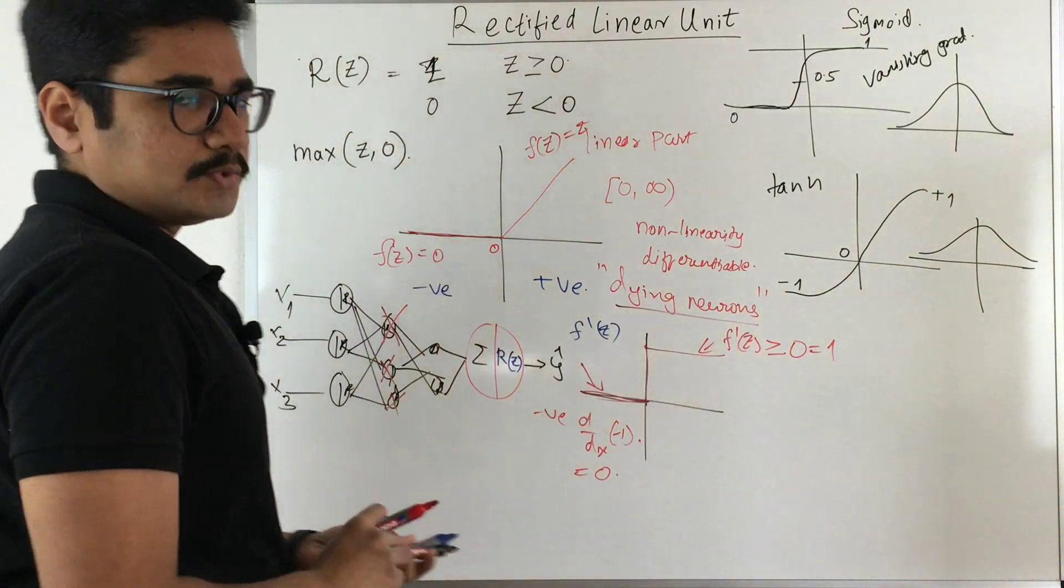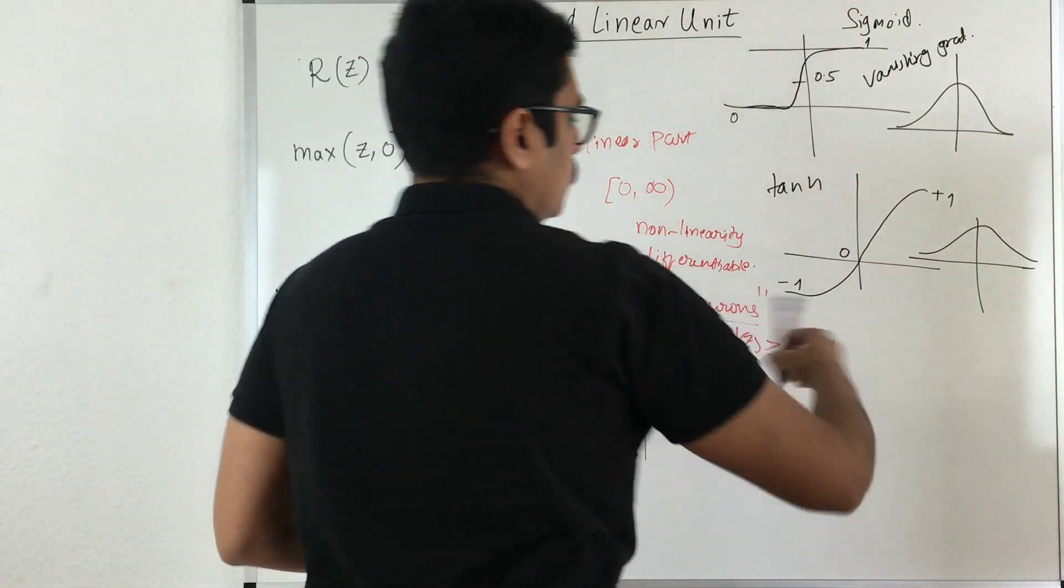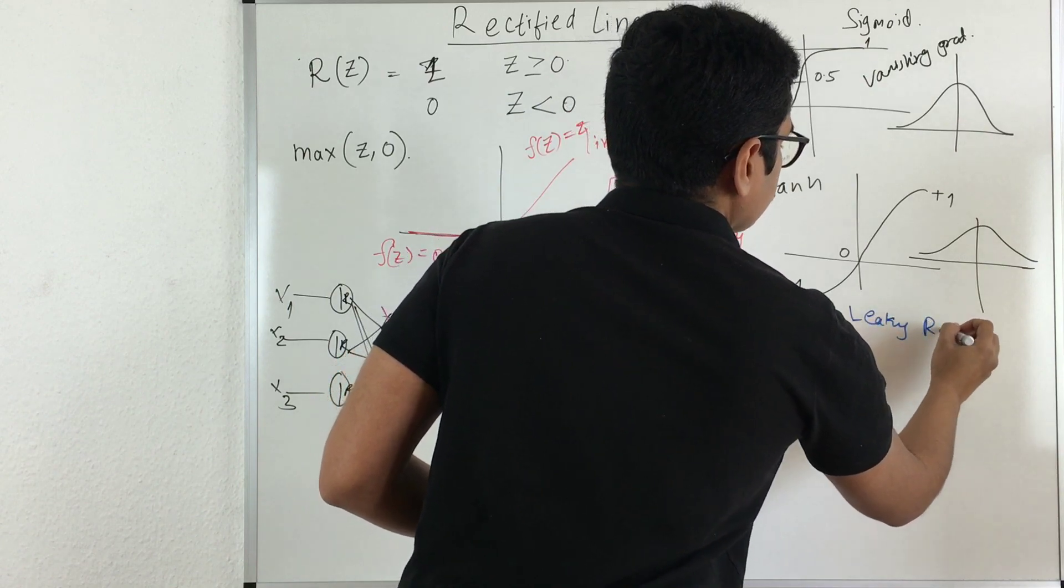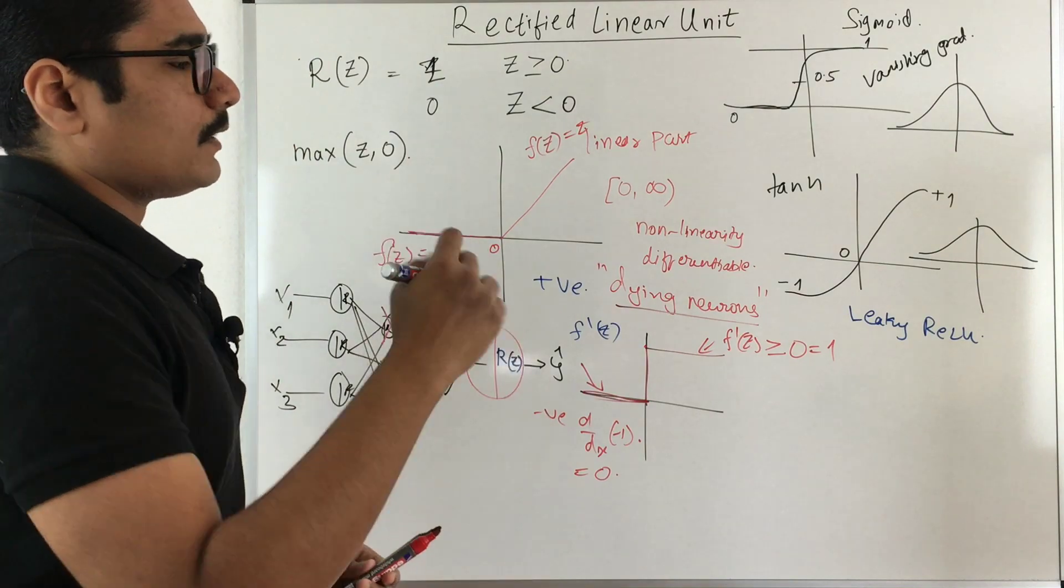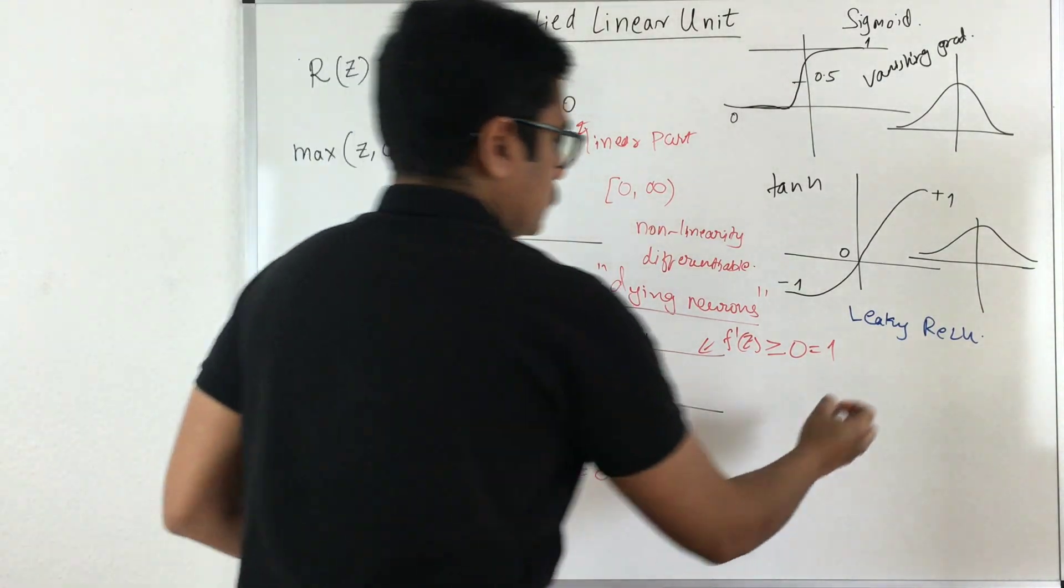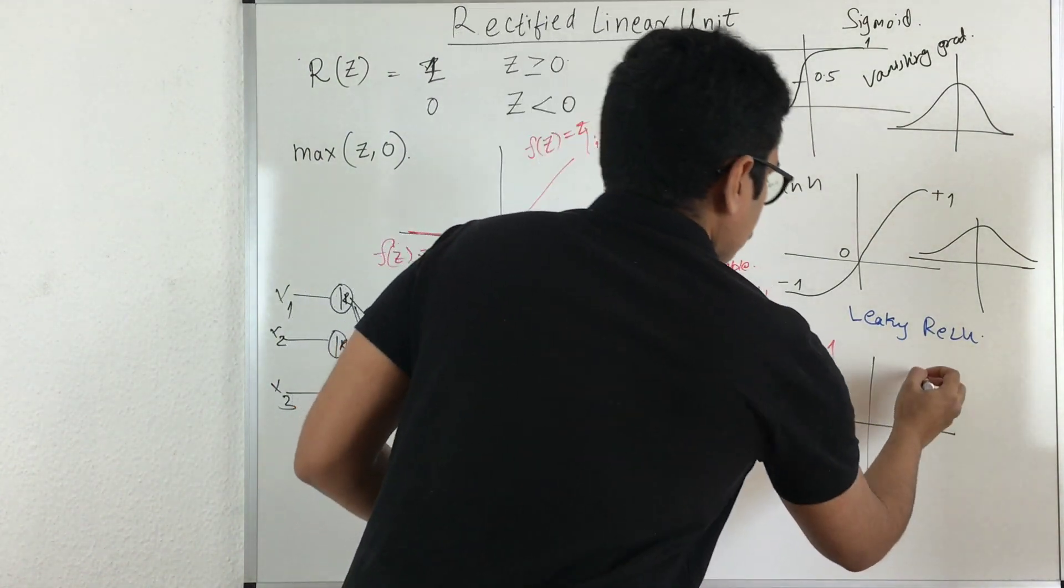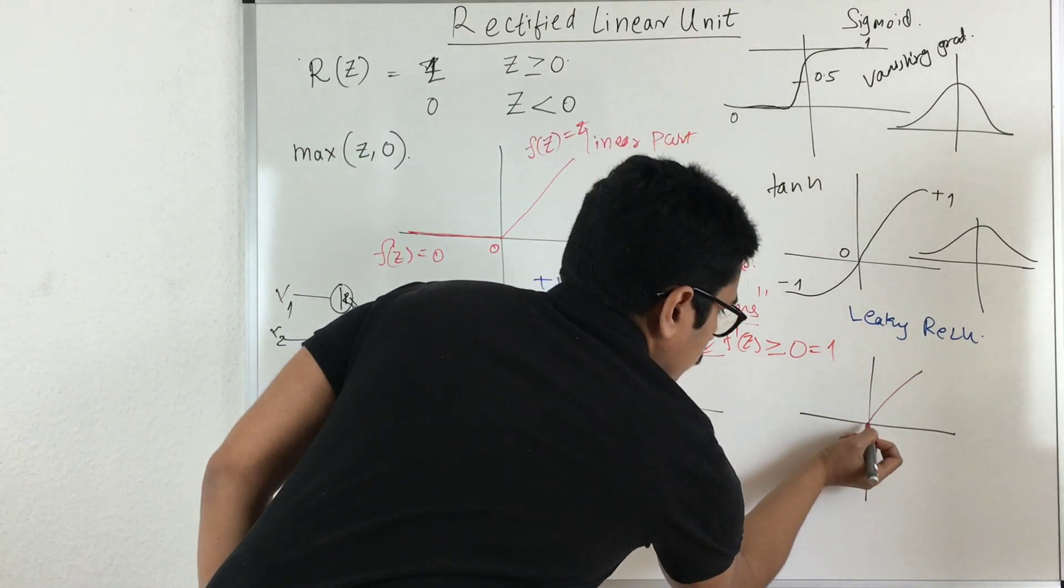So what is the solution to this? So the solution to this is what we use a variant of this called as leaky ReLU. Now as from the name suggests you are making some leak in this particular function. So where that leak comes into picture? So this part remains the same.